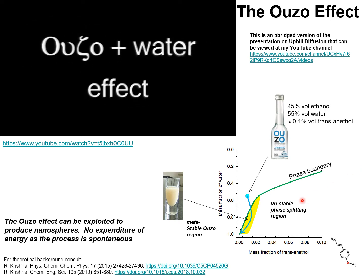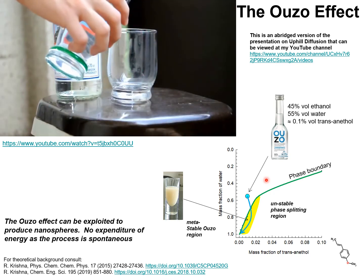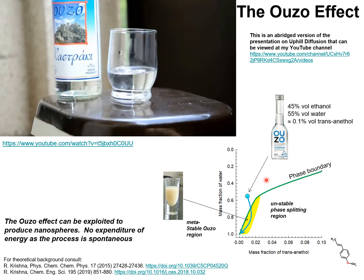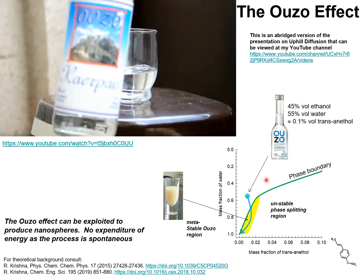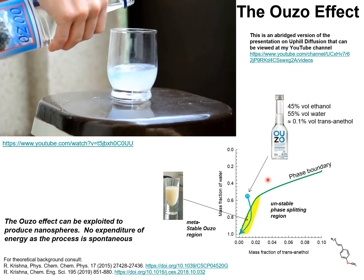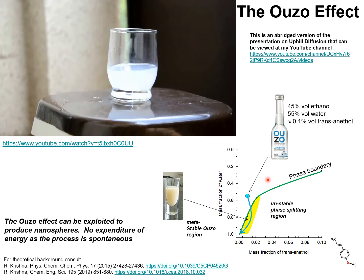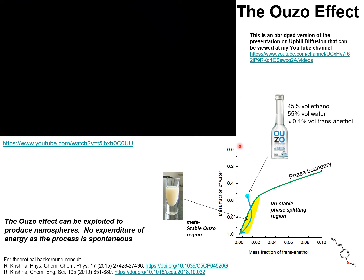Let's have a look at this experiment. The phase diagram of ethanol, water, and transanethole is shown by the green line, where the y-axis is the mass fraction of water and the x-axis represents the mass fraction of transanethole.